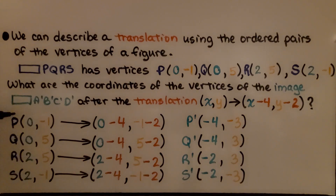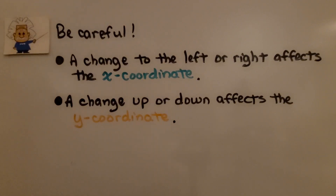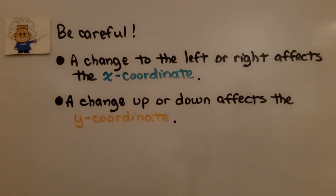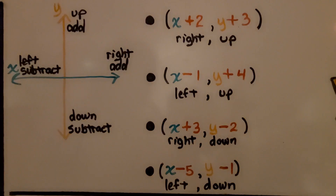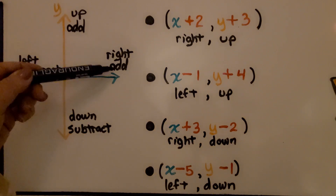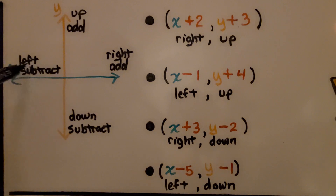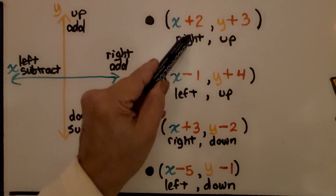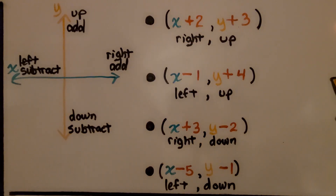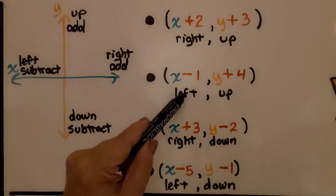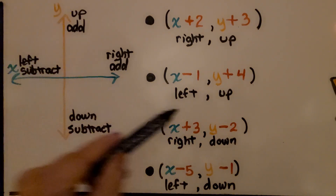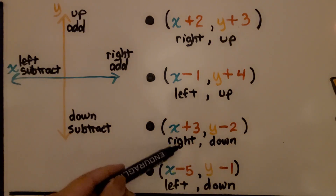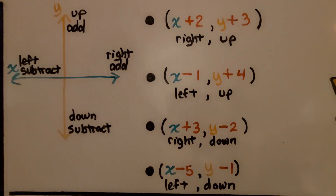We applied this rule to all of the pre-image points and got our image points. Be careful: a change to the left or right affects the x coordinate; a change up or down affects the y coordinate. Moving right means we add to x; going left means we subtract from x; going up means we add to y; going down means we subtract from y. For example, x plus two, y plus three means going right and up; x minus one, y plus four means going left and up; x plus three, y minus two means going right and down.